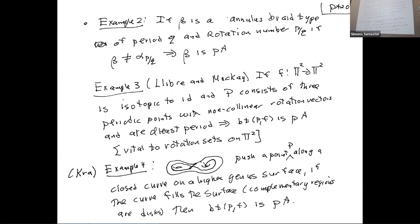Similarly, if you have an annulus braid type of period Q rotation P/Q and it's not rigid rotation, then it's pseudo-Anosov. This is important in torus rotation sets. If you have three points with non-collinear rotation vectors (points in the plane corresponding to the two generators of the torus), then that braid type is pseudo-Anosov and is vital to understanding rotation sets.